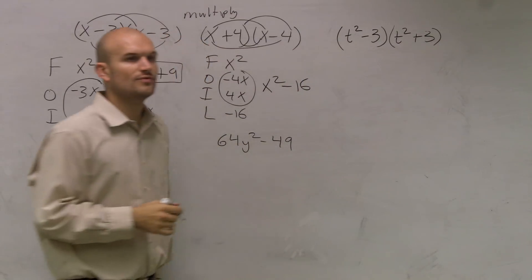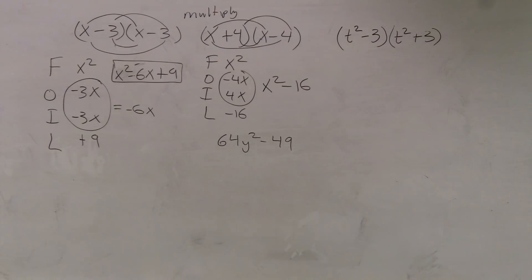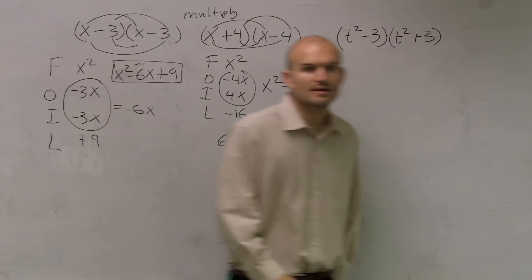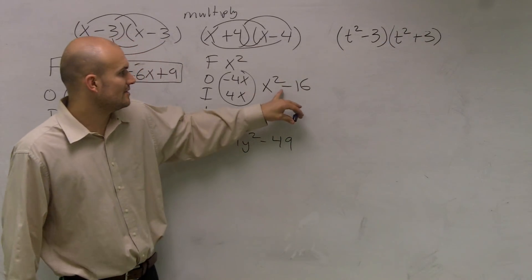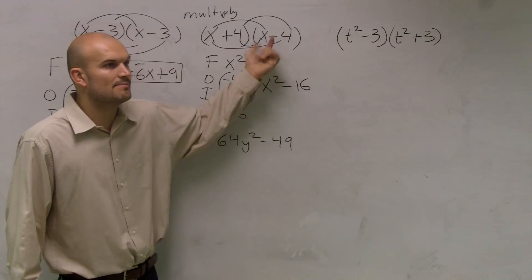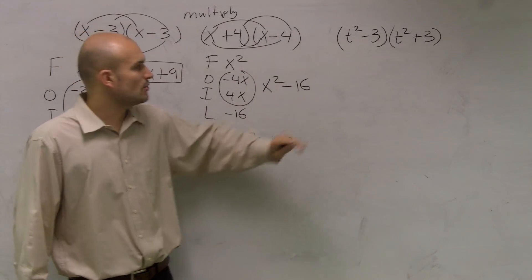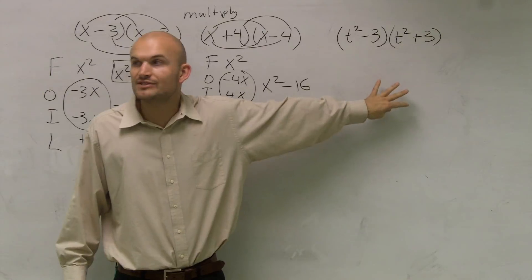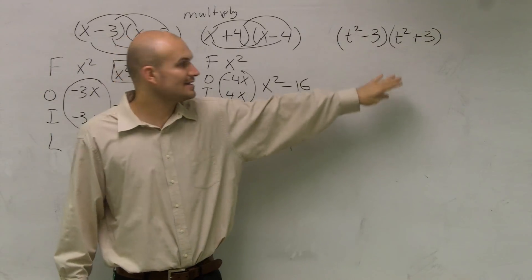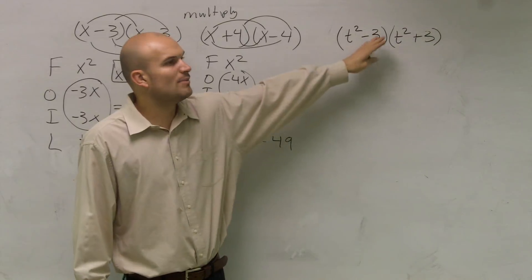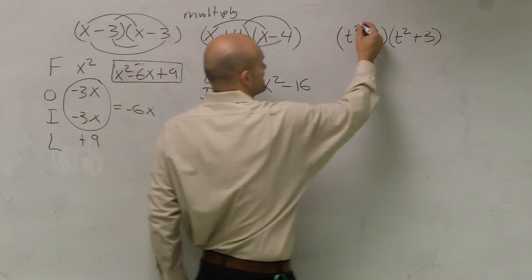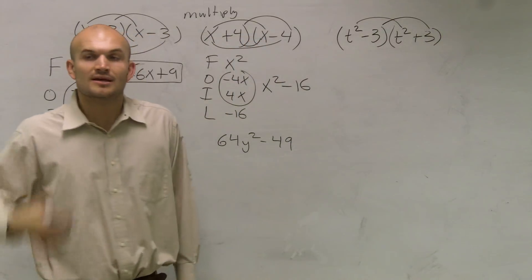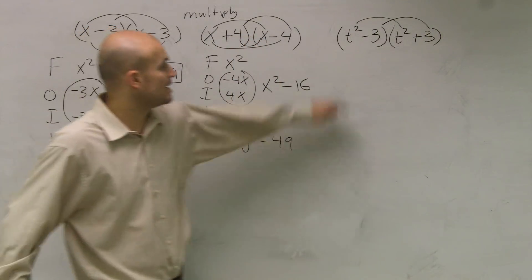So the cool thing to understand is that here, you have x squared minus 16. My middle terms cancel out. So without even doing any work, without even doing FOIL, I can look over here and say, I know my middle terms are going to cancel out, all I need to do is multiply the first and the last.